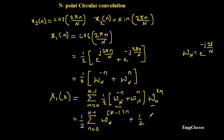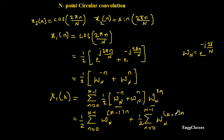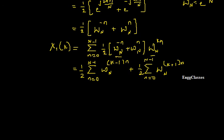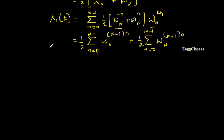So X1(k) = (1/2) * Σ(n=0 to N-1) W_N^((k-1)n) + (1/2) * Σ(n=0 to N-1) W_N^((k+1)n). Now, if I put k=1 in the first summation, (k-1) becomes 0, giving W_N^0 = 1. The summation of 1 from n=0 to N-1 equals N.